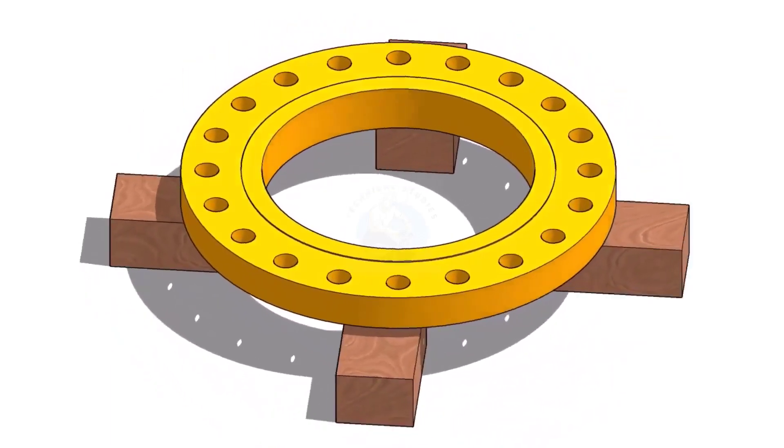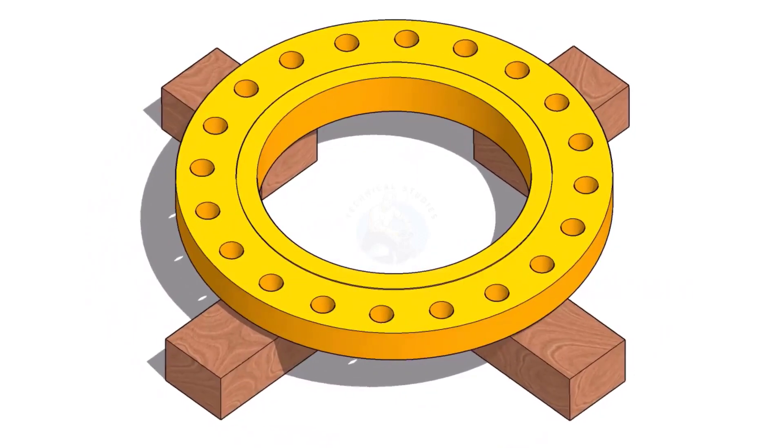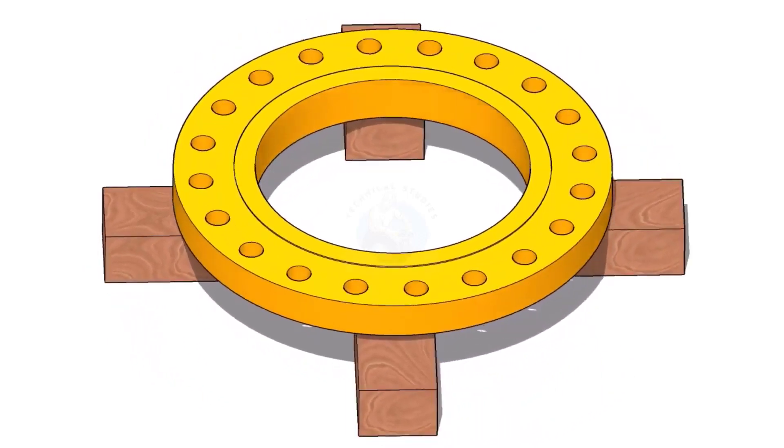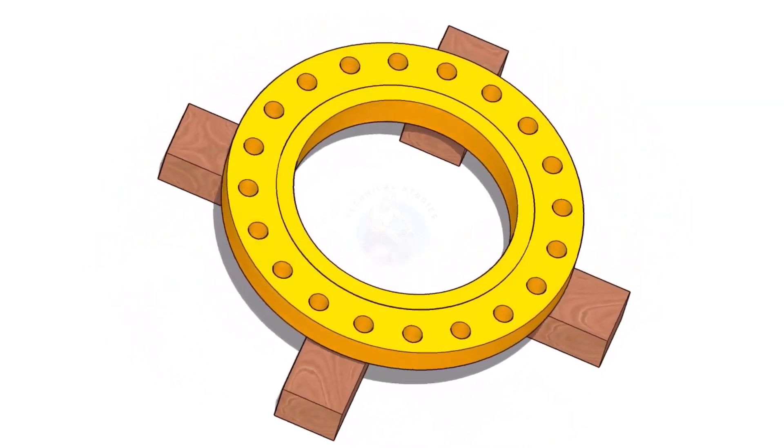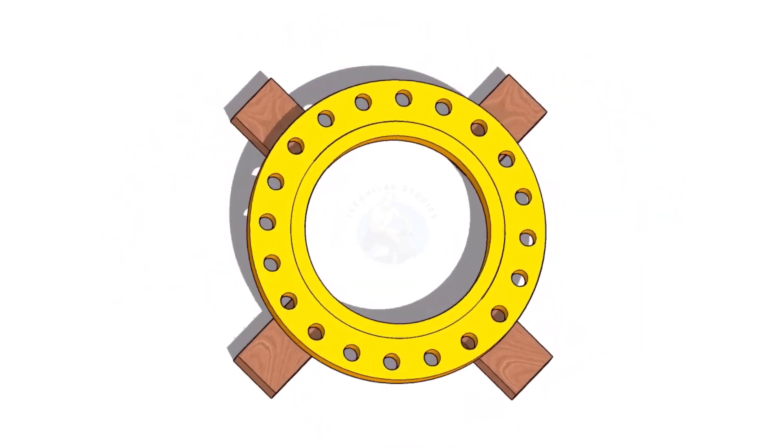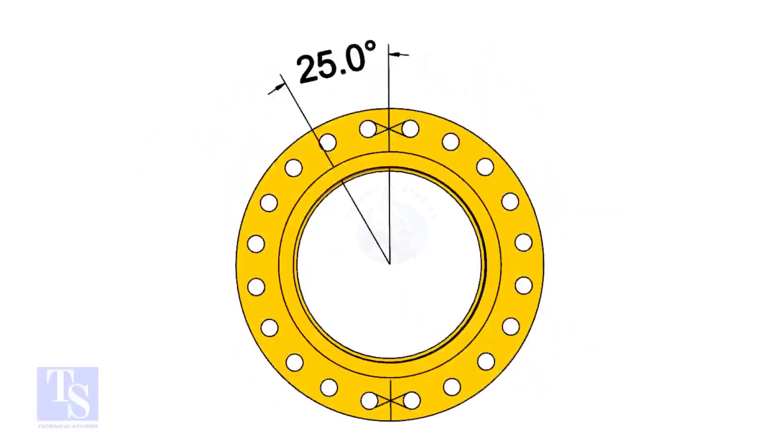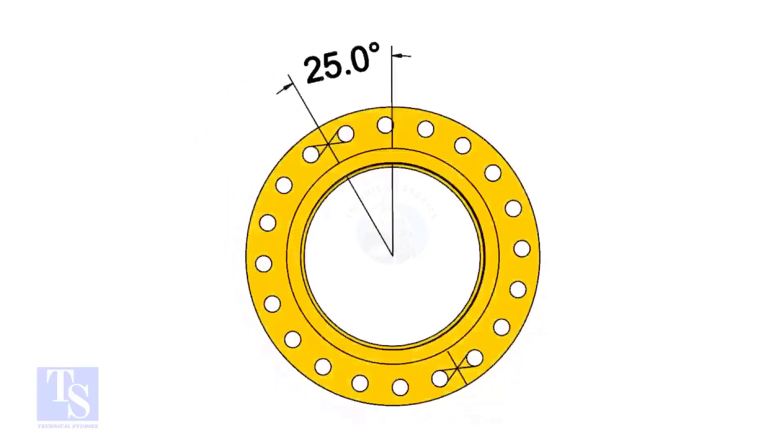I choose a slip-on flange for the example, but the calculation and the procedure are the same for all flanges. The pipe and the flange size is 16 inch, and the flange will rotate 25 degrees anticlockwise. Hope you all know the difference between clockwise and anticlockwise rotation.